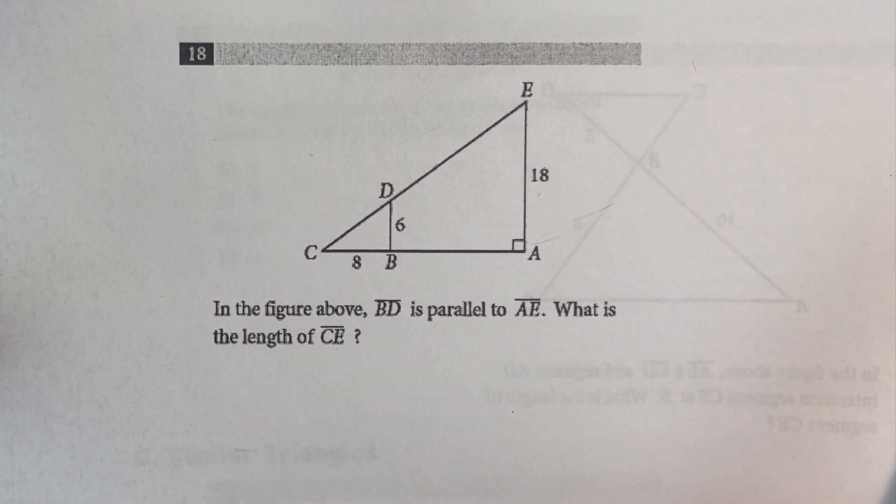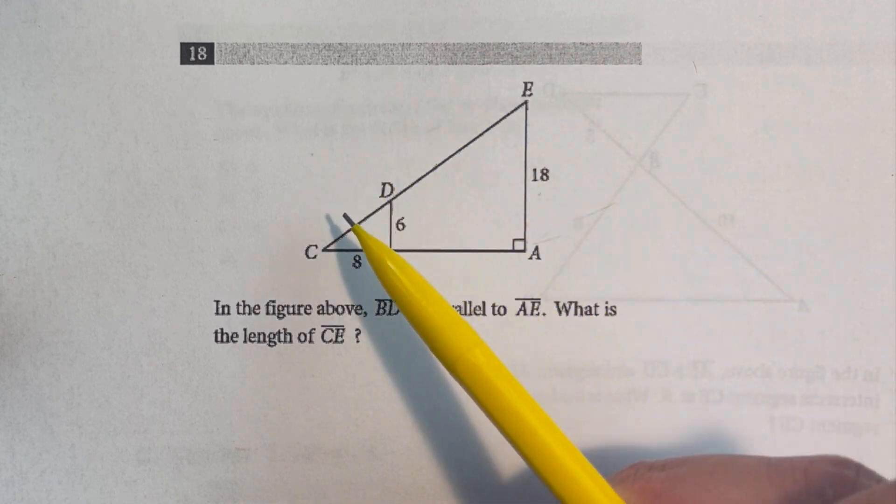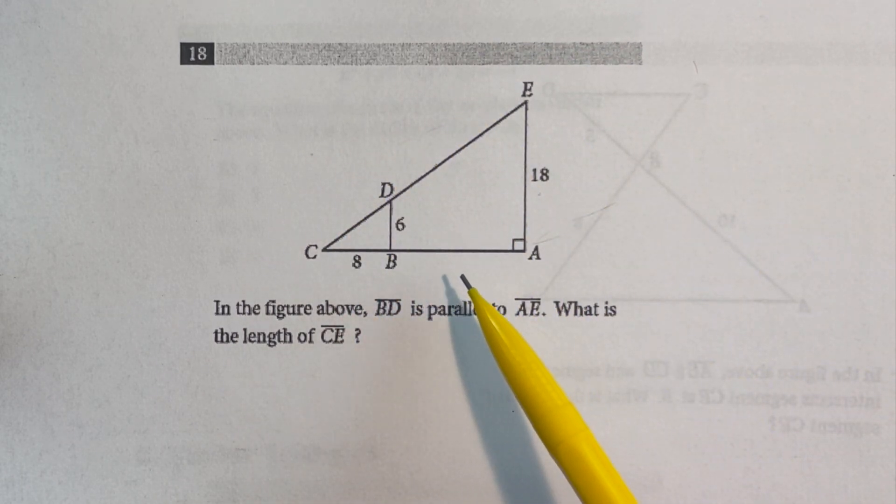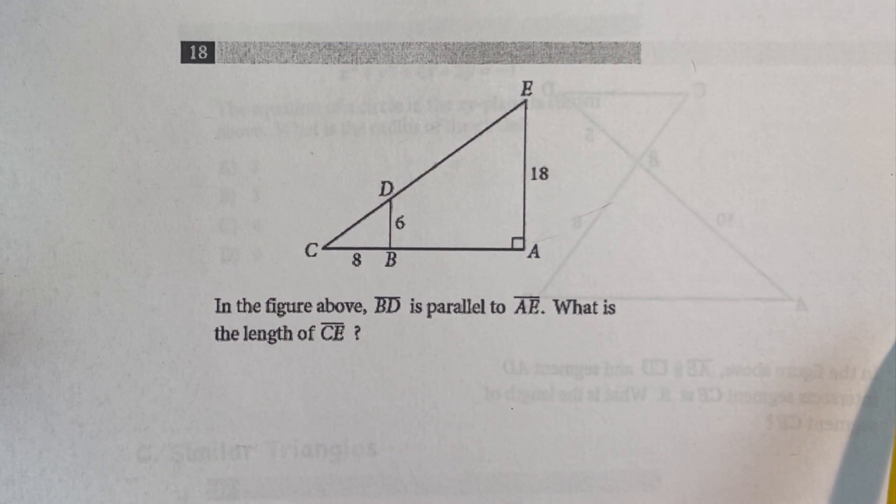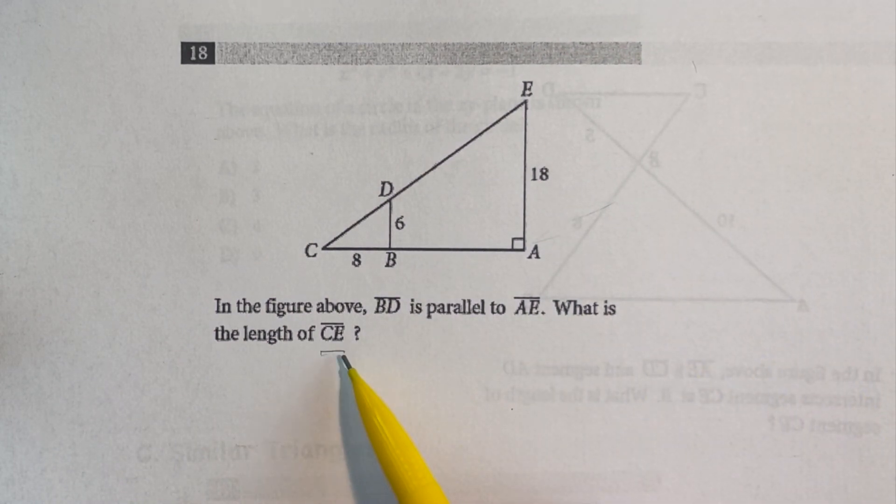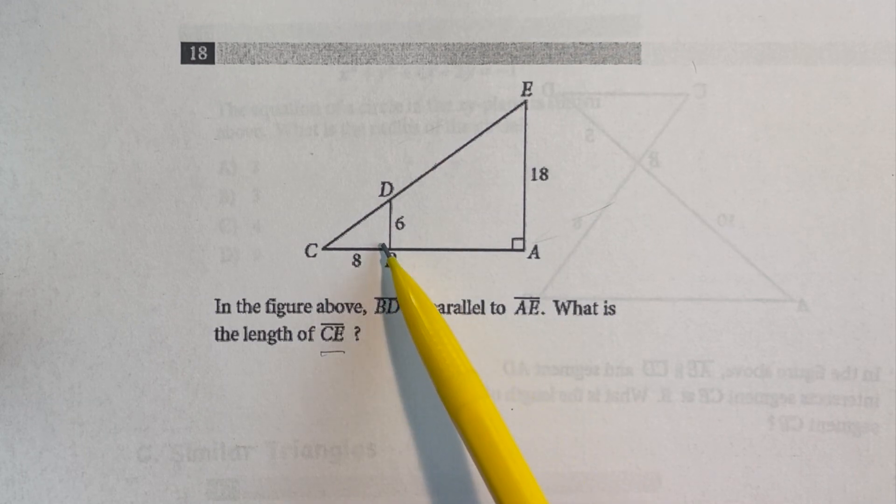All right guys, as you can see we have another geometry problem. It's a picture, underneath it doesn't say 'figure not drawn to scale,' so that means everything about this shape is accurate. So let's pretend I don't know how to get CE. This is dealing with similar triangles. You've got one little triangle and a big one. Maybe I don't remember how to do that.